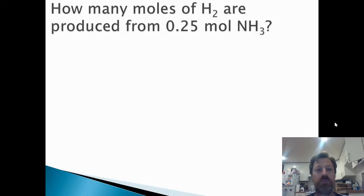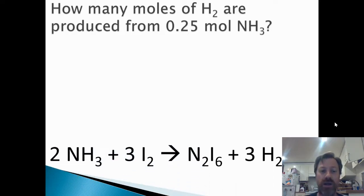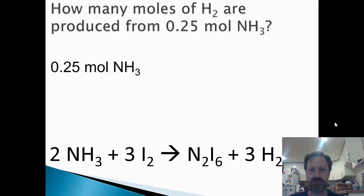So now let's do an example. How many moles of H2 are produced from 0.25 moles of NH3? First thing, of course, we're going to start out writing our given with the unit. So here we have 0.25 moles of NH3. Now, for the rest of it, you need the balanced equation, which is why the balanced equation I put here at the bottom of the screen. If you don't have the balanced equation, you can't solve these problems here.